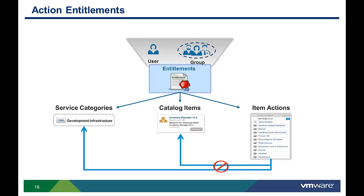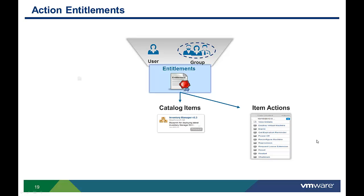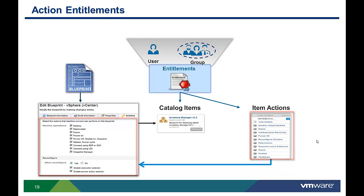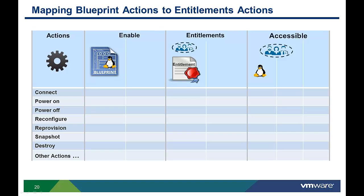Action entitlements apply to all the items provisioned by those users or groups of users. There is, however, a relationship between the actions specified in the catalog item's blueprint and the action entitlements. For actions to be accessible, they must first be enabled on the blueprint. Then the group or user must be entitled to perform those specific actions. The actions accessible through the self-service portal will be a combination of which actions were enabled on the blueprint and then entitled. Let's look at how to configure some action entitlements.